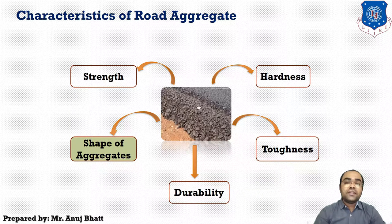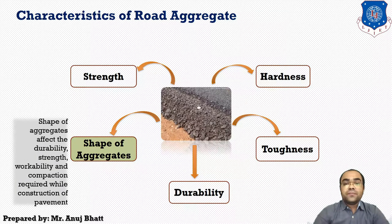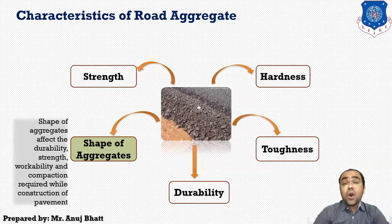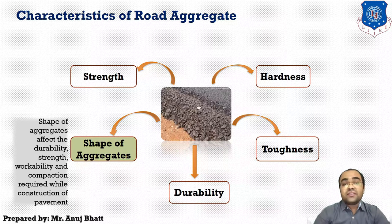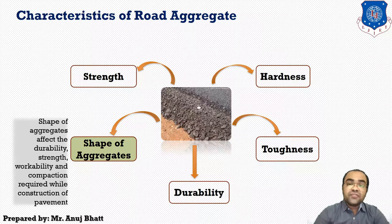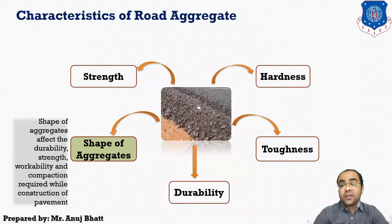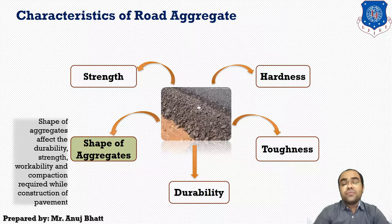The next property is the shape of aggregates. The shape of aggregates may be rounded, cubical, angular, or flaky and elongated. The shape of aggregates affects its functionality in particular construction. Flaky and elongated particles will have less strength and durability when compared to cubical, angular, and rounded particles.